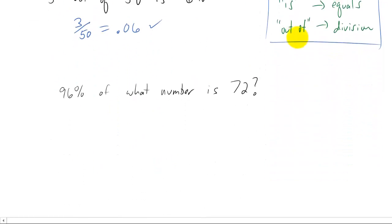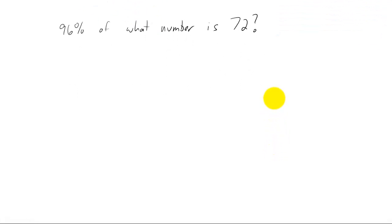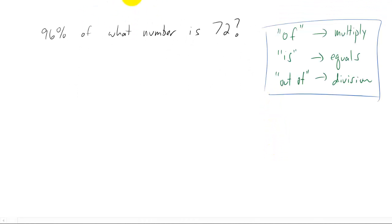Let's take a look at this statement. 96% of what number is 72? I copied down the list of words that we can translate into math. We need to add to this list because we now have 'what number' in this sentence. Now anytime we see 'what' or 'what number' or something like that in one of our statements about percentages, we're going to turn that into an unknown, which I typically like to just call x. So let's do it with this sentence.